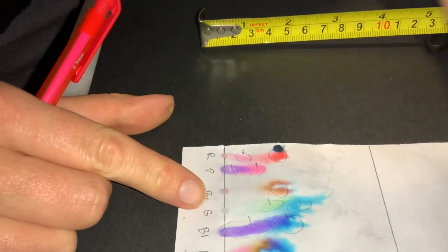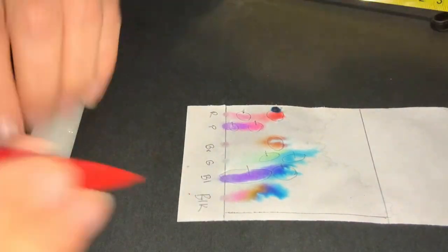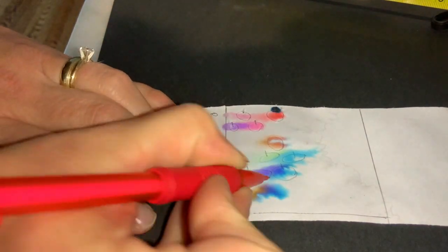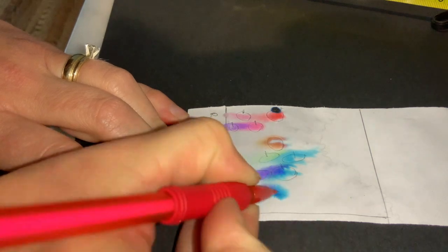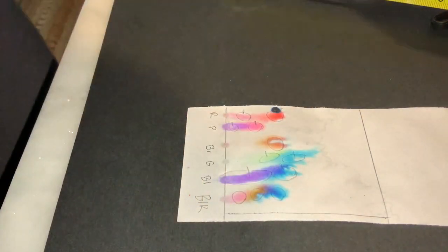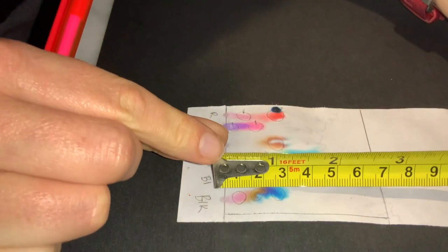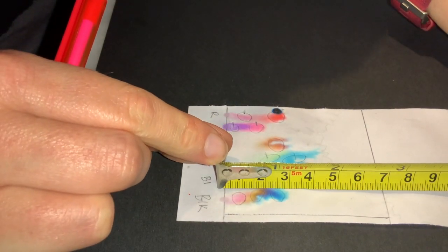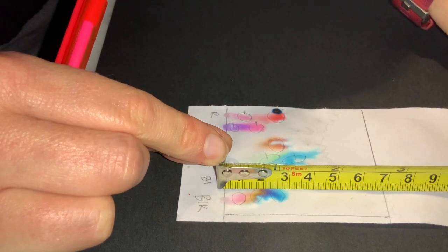And then finally, our black. So we've got quite a few colors here. We have this, that, and that. So again, you want to measure the distance to the center point of each of those spots.